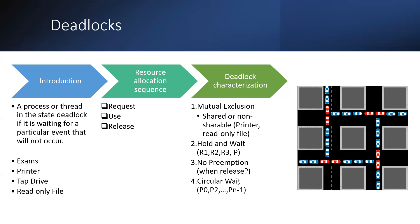The fourth condition is Circular Wait — multiple processes form a cycle. Processes starting from P0, P1, P2... P0 is a process which requires resources held by P1, and P1 requires resources held by P2, and so on up to PN-1 requiring resources held by P0. For example P0, P1, P2, P3 — processes are waiting in a circular chain for resources held by other processes.